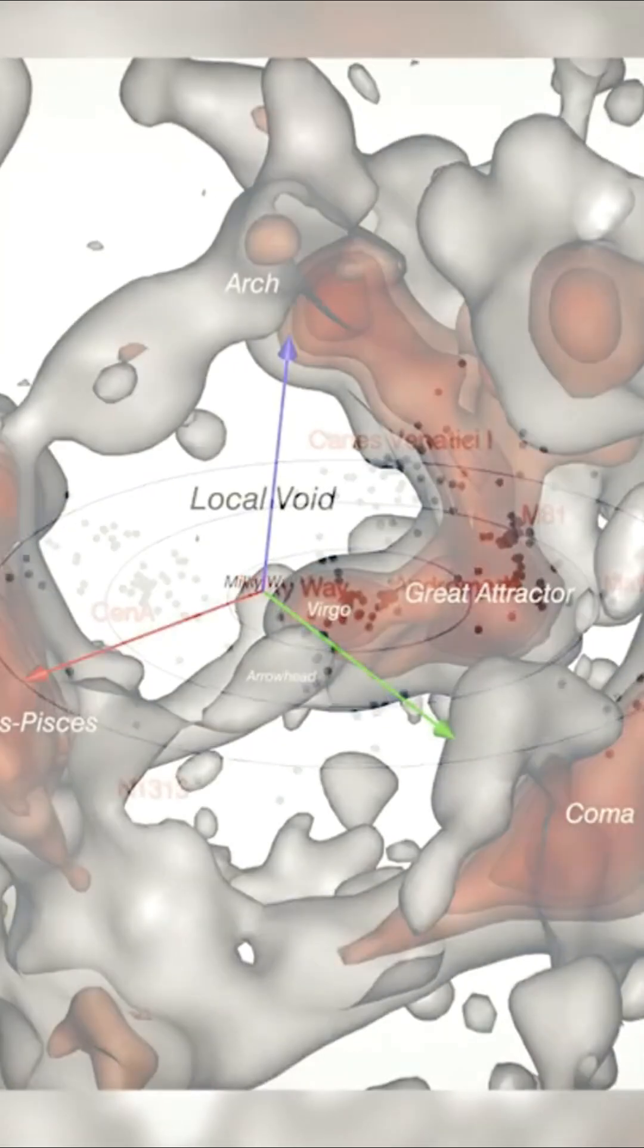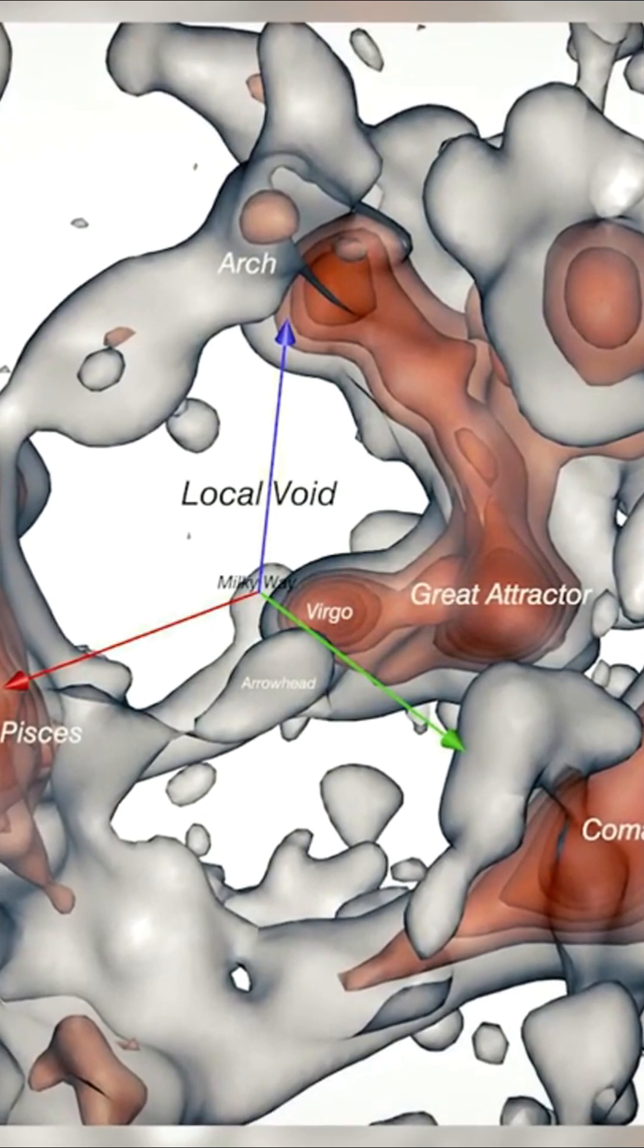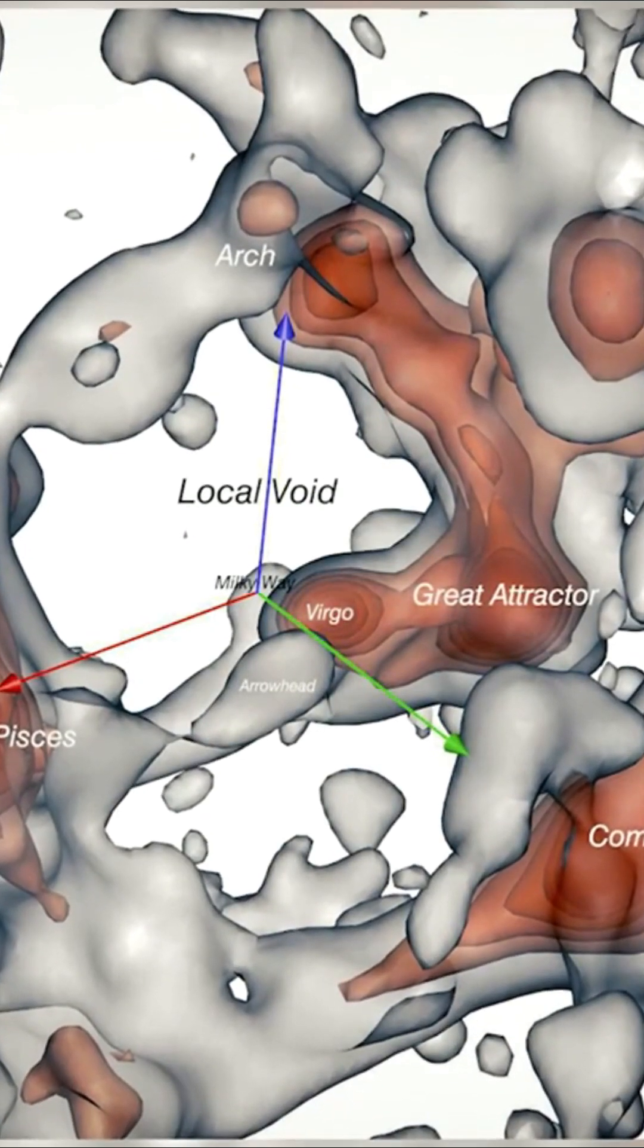This virtually galaxy-free region was discovered by Richard Brent Tulley and Rick Fisher in 1987.